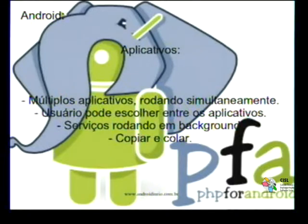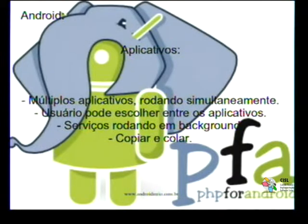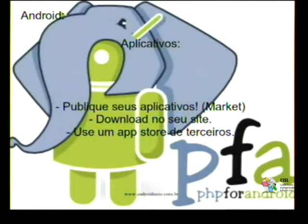You can run applications with multitasking — you can switch between apps and put them running in the background. You can also do copy and paste of content, and do IPC between processes via a pipe, distributing data from one application to another. You can use the marketplace to publish your application, or put it on your own site or use a third-party store.